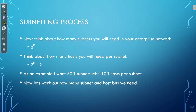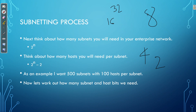So let's do this together. 2 to the power of 1 is 2. 2 to the power of 2 is 4. 2 to the power of 3 is 8. 2 to the power of 4 is 16. 2 to the power of 5 is 32. 2 to the power of 6 is 64. 2 to the power of 7 is 128. 2 to the power of 8 is 256. And 2 to the power of 9 is 512.